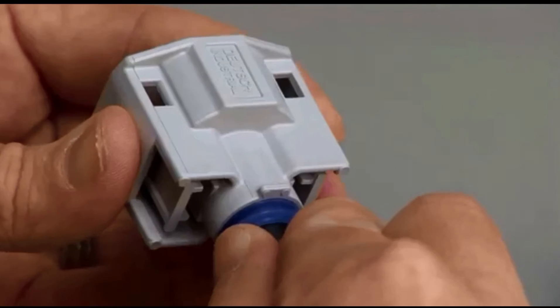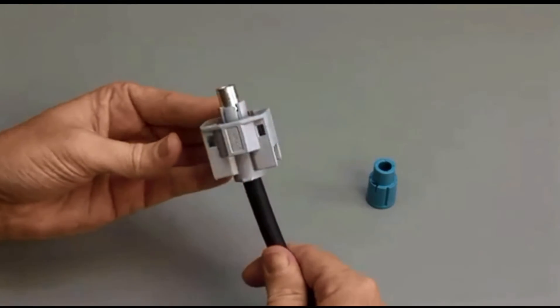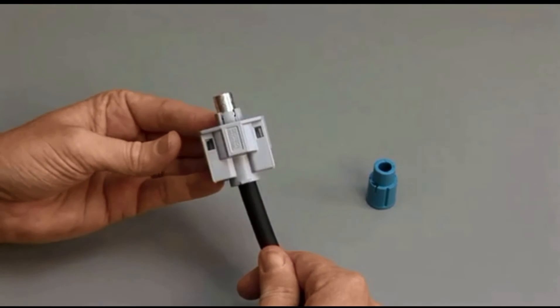While holding the wire seal in place, push the contact straight into the rear of the connector until you hear and feel a click. A slight tug will confirm that the contact is properly locked into place.